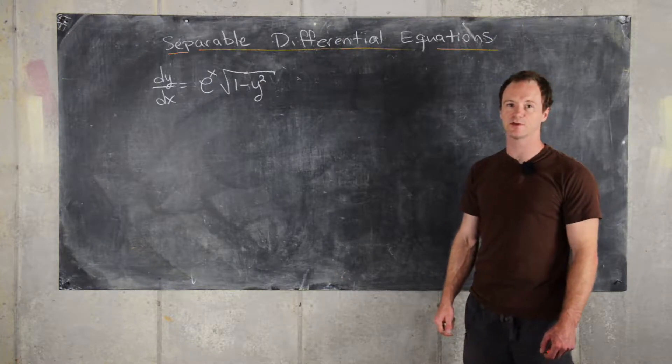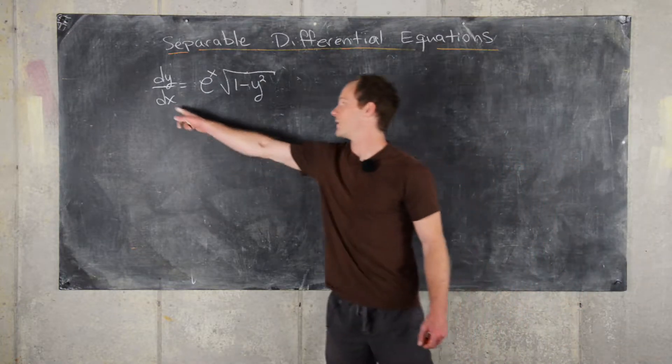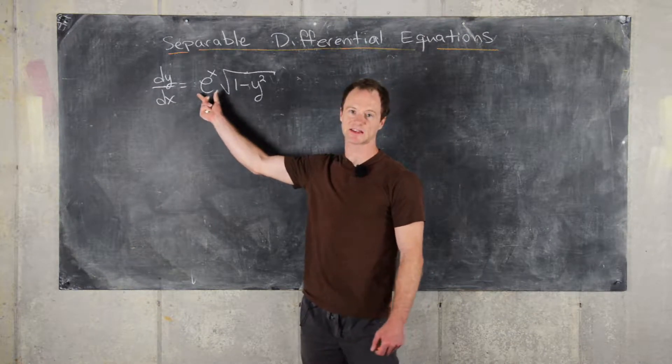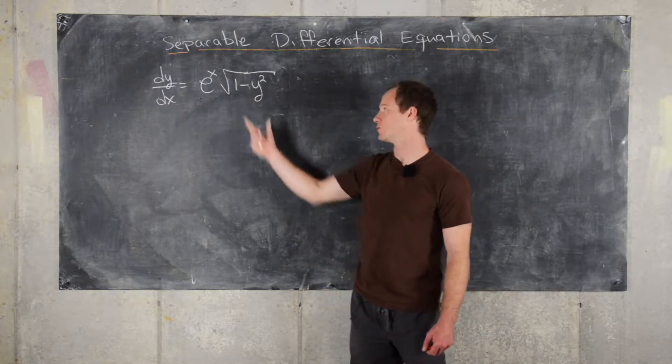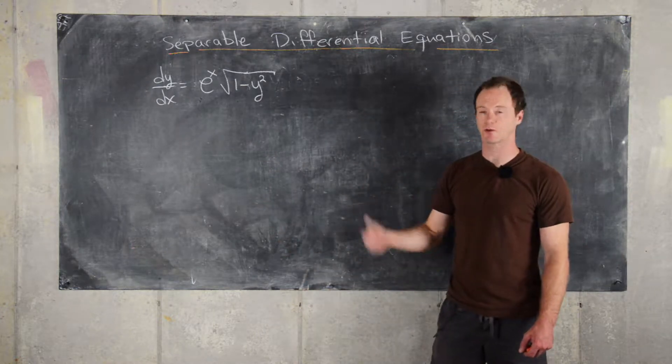Okay, here's an example of a separable differential equation. So we have dy by dx equals a function of x, in this case it's e to the x, times a function of y, in this case it's 1 minus y squared, the square root of that.